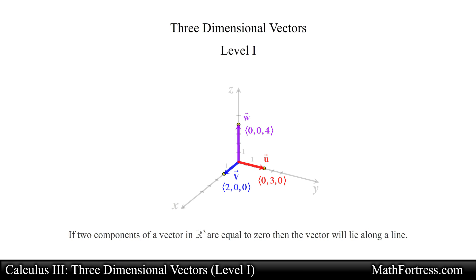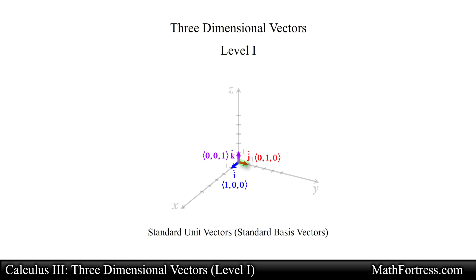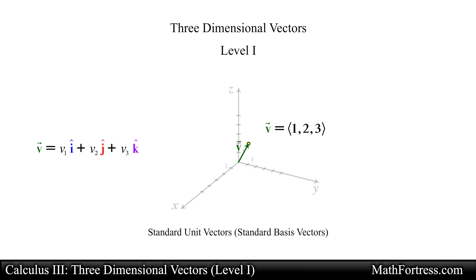Just like two-dimensional vectors can be represented using the standard unit vectors, also known as standard basis vectors, we can also use the same notation to denote vectors in space. In this case we will use the unit vector i-hat, j-hat, and the unit vector k-hat, which represents the unit vector that points along the z-axis. Any vector in space can be represented by a scalar multiple and sum of the unit vectors. For example, the vector with components 1, 2, and 3 can be represented as i plus 2j plus 3k.